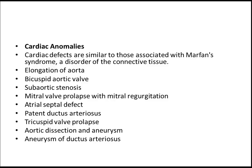For cardiac anomalies, what you need to remember is the elongation of the aorta and bicuspid aortic valve. Remember, this is very important. The rest you can remember if you want.